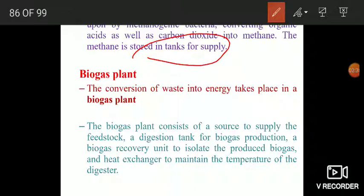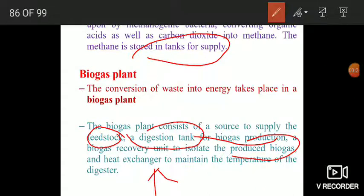Now something about biogas plant. How a biogas plant appears or what are the structural needs of a biogas plant? Biogas plant is actually a plant in which the conversion of waste into biogas or energy takes place. This biogas plant consists of a source to supply the feedstock. You should have a constant source of organic matter or organic waste, a digestion tank for biogas production, a biogas recovery plant or unit to isolate the produced gases, and you should have a heat exchanger to maintain the temperature of the digester.